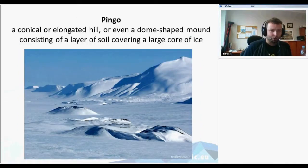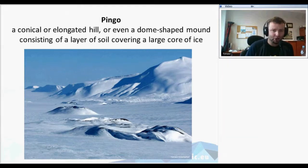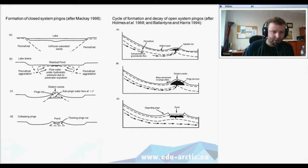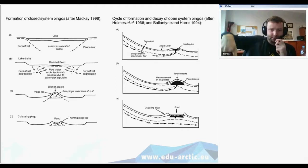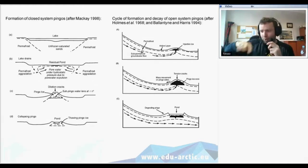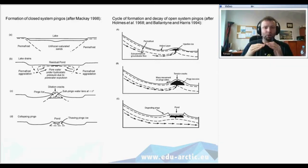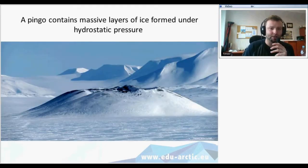There is also the landform called pingo, which has a conical or elongated shape — it is a hill that can also have a dome shape, consisting of a layer of soil covering a large core of ice. A pingo is formed under hydrostatic pressure: if the ground is frozen but underneath the permafrost there is sub-permafrost groundwater flow, this water will appear on the surface but can freeze again, creating an injection of ice — an ice lens underneath the ground — that pushes up the materials. This pushed material is visible as a pingo.